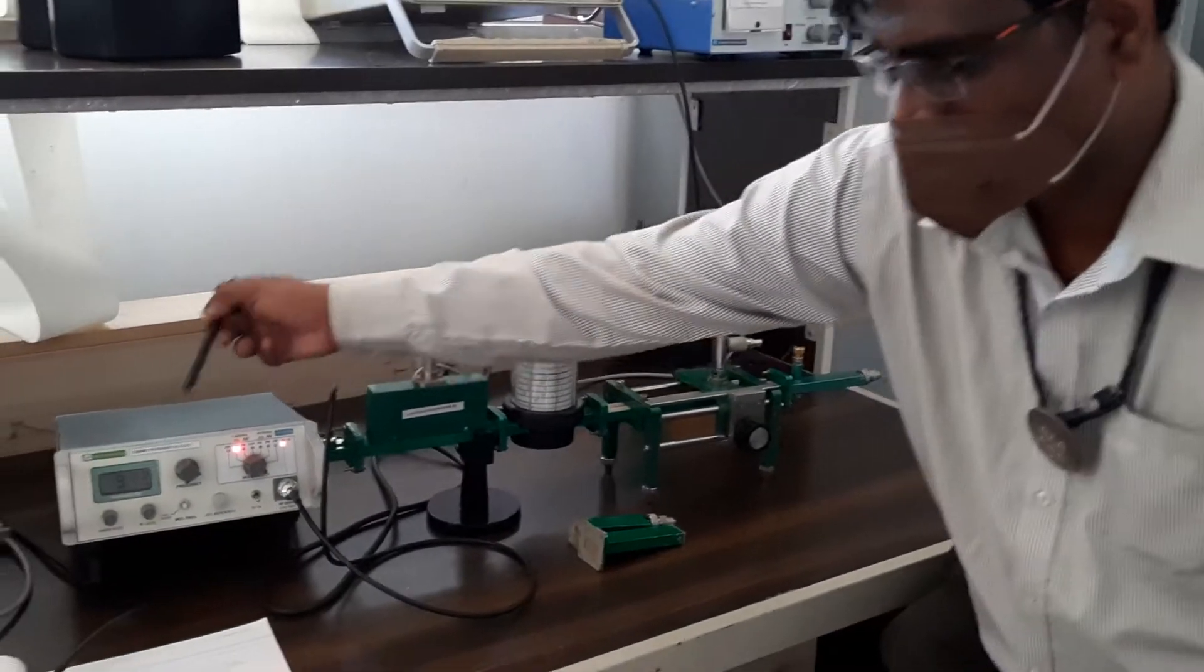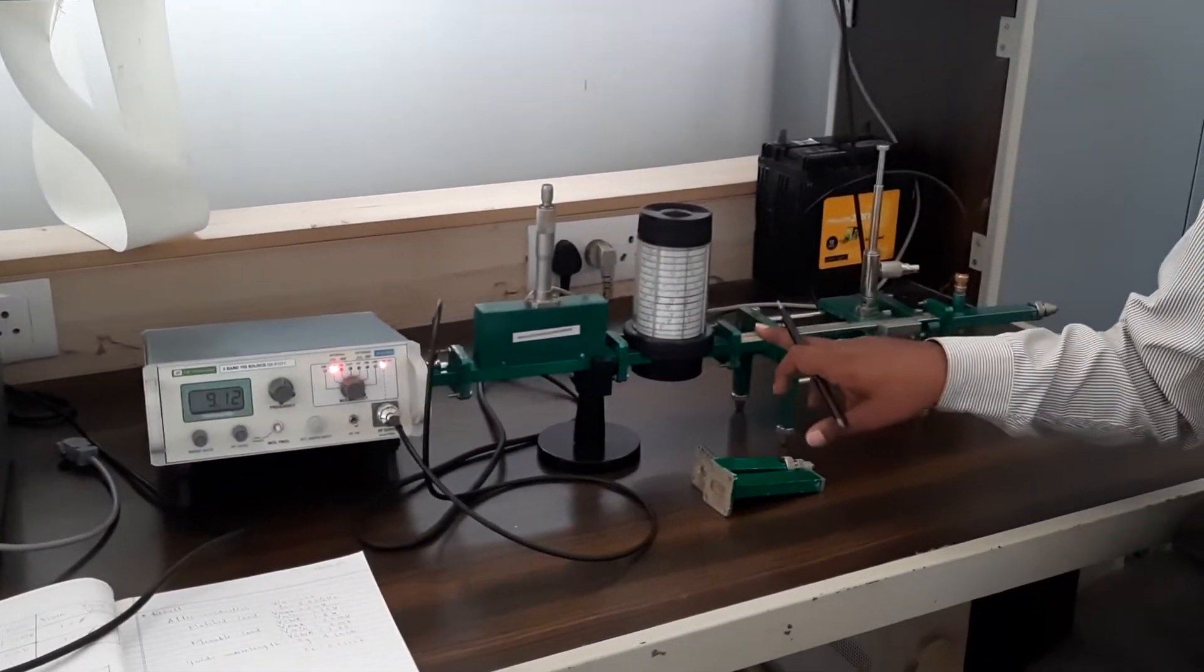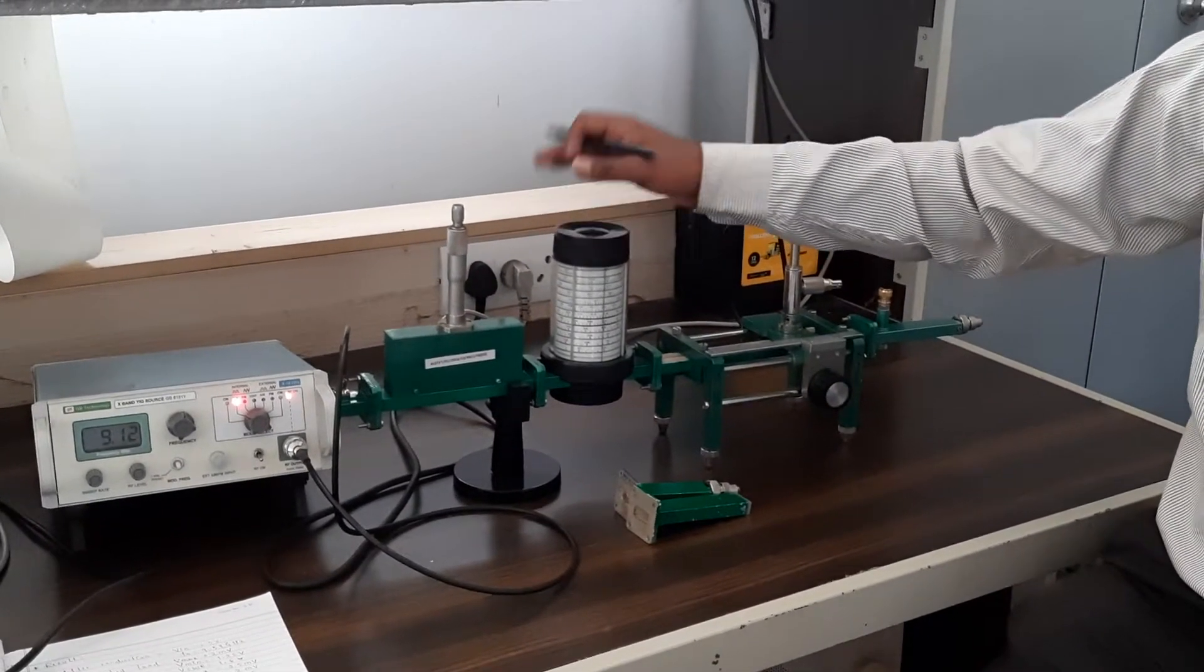Here we could observe a slight difference, but that is not a problem. Up to 3 decimal places we will be able to identify using this frequency meter or resonant meter.